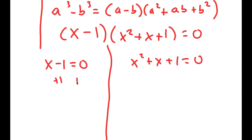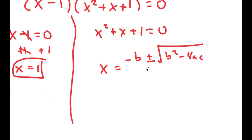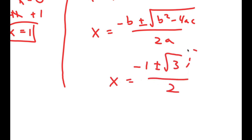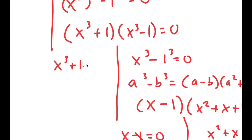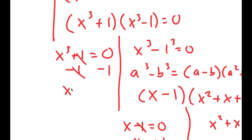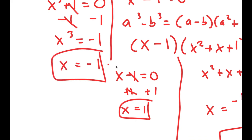For x minus 1 equals 0, I add 1 on both sides and get x equals 1. For x squared plus x plus 1 equals 0, I can use the quadratic formula, which gives x equals negative 1 plus or minus the square root of 3i, over 2 — so these are two more solutions. For x to the power of 3 plus 1 equals 0, I subtract 1 on both sides to get x to the power of 3 equals negative 1, meaning x equals negative 1, which is another solution.